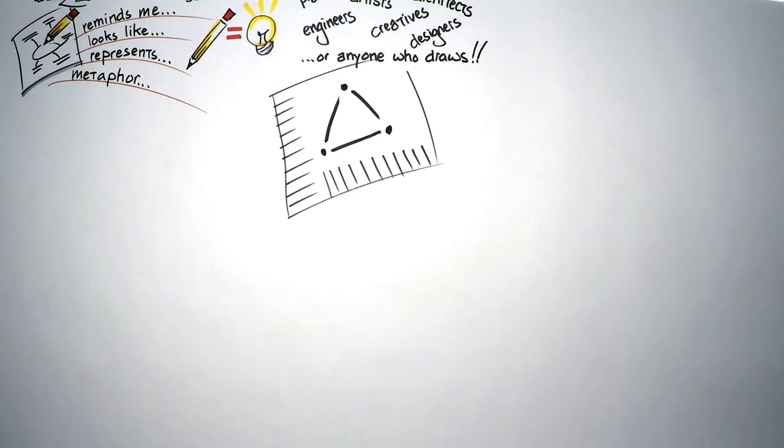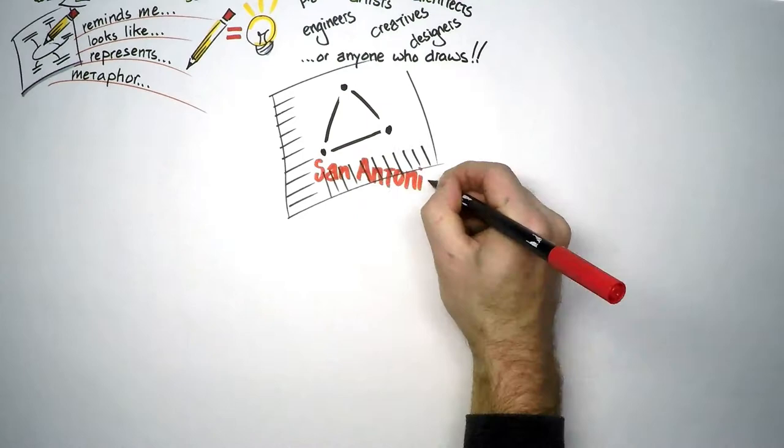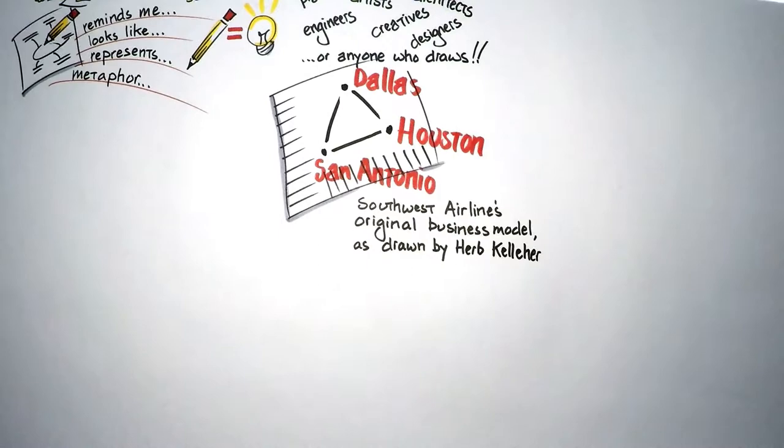Have you ever seen this before? It's been called Texas's most famous napkin. It's Herb Kelleher's concept for the original business model for Southwest Airlines, and it was literally drawn on the back of a napkin: San Antonio, Dallas, Houston. There's a book about that story if you're interested. It's called 'Back of the Napkin.'